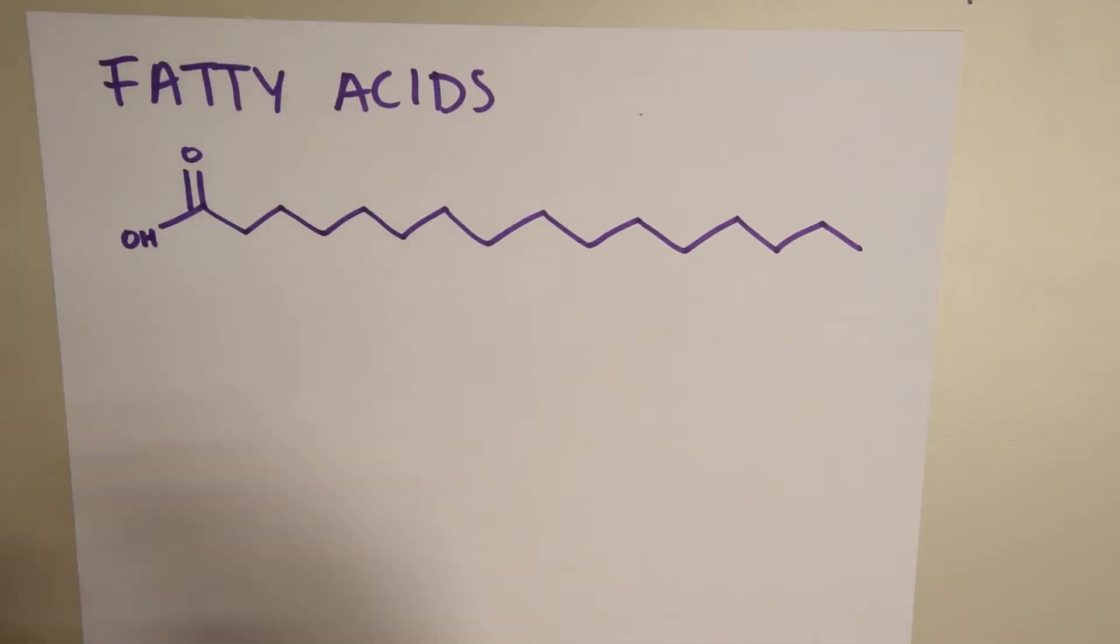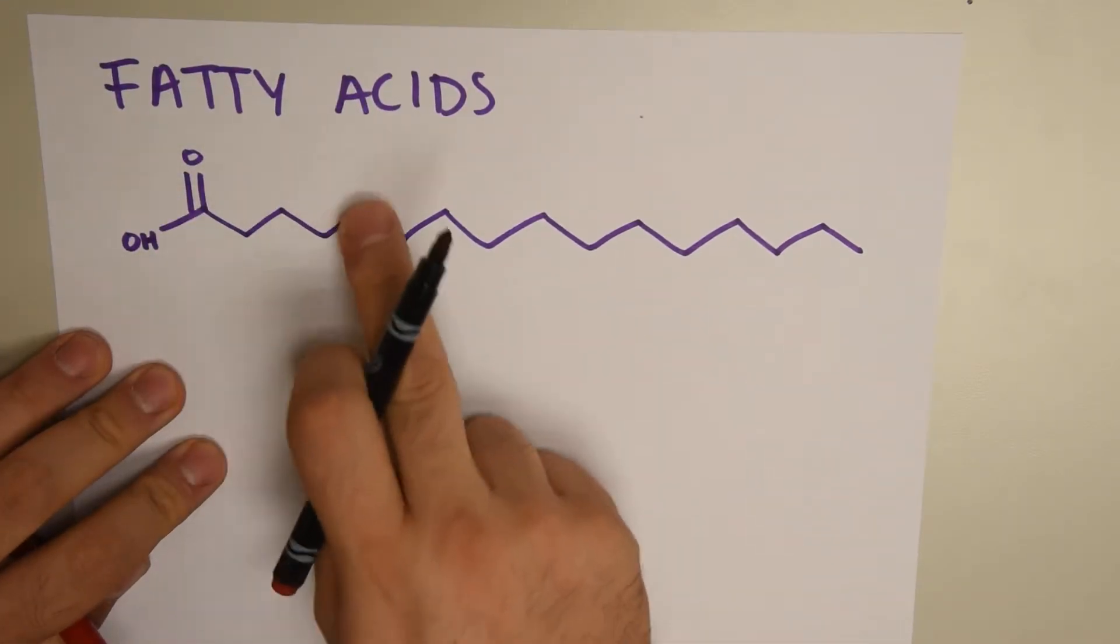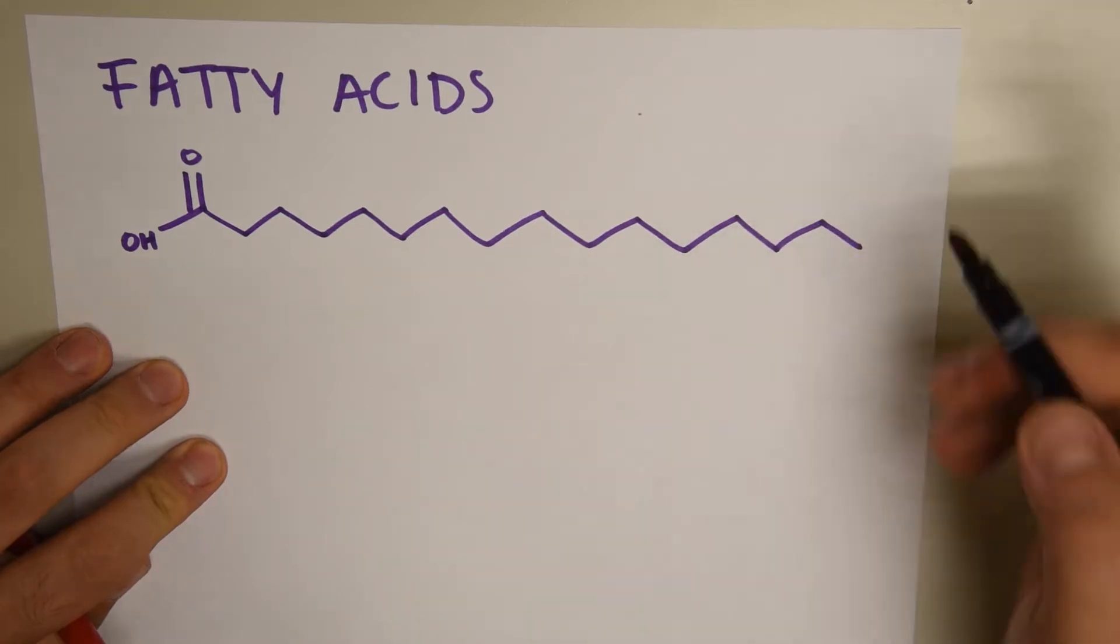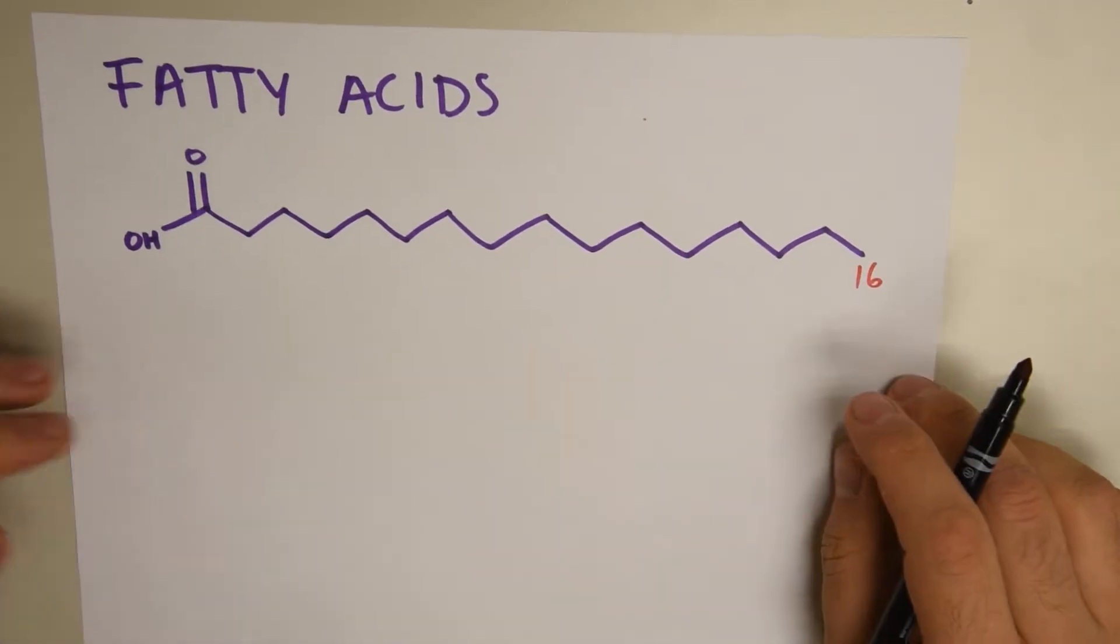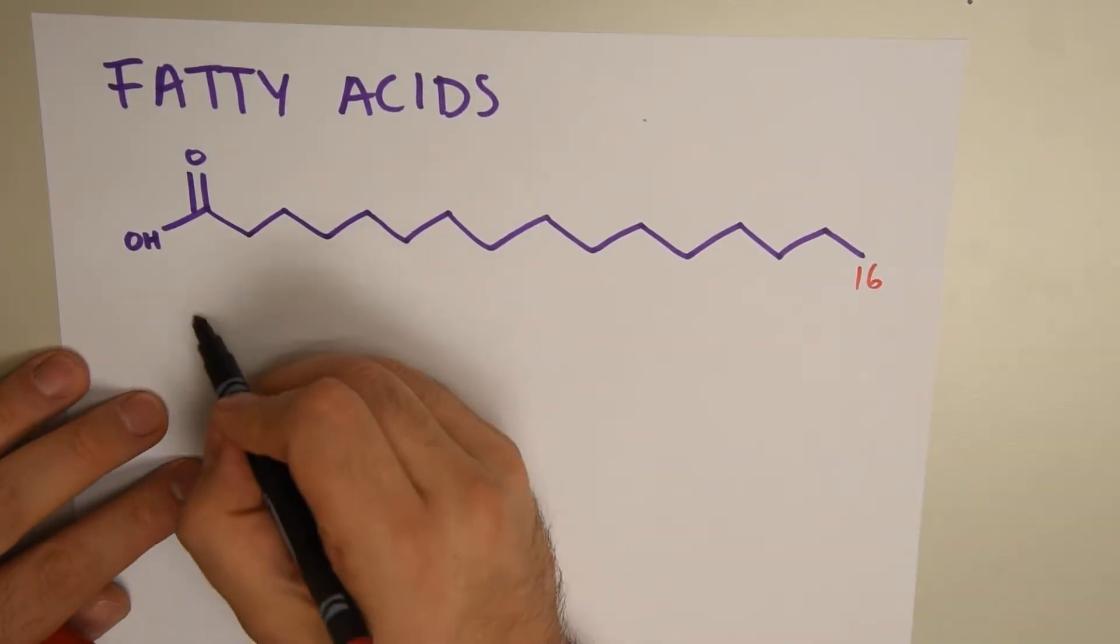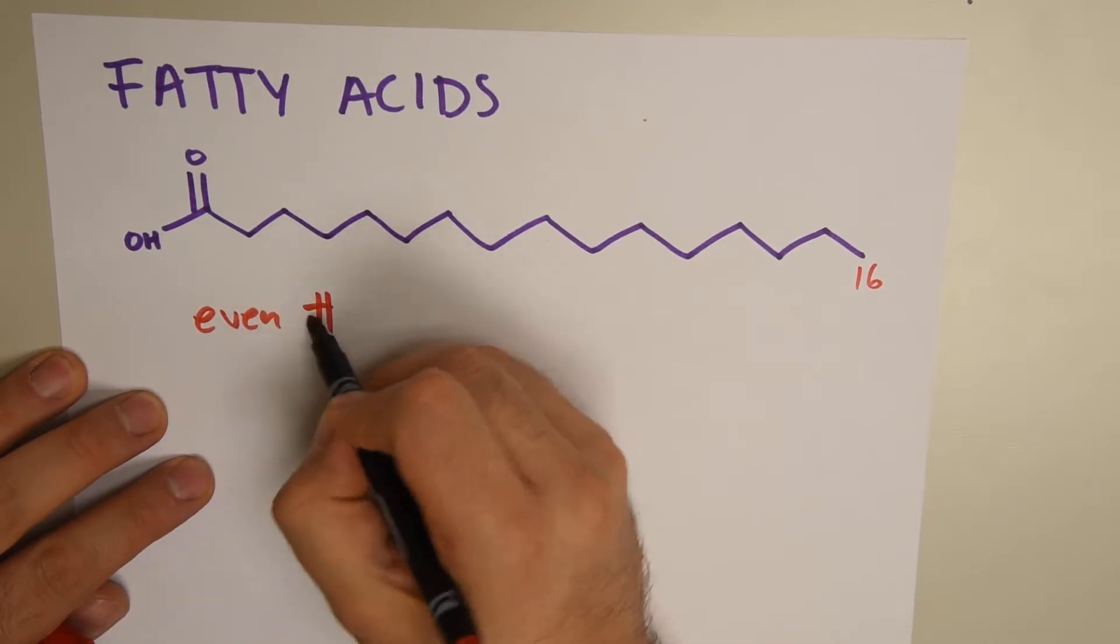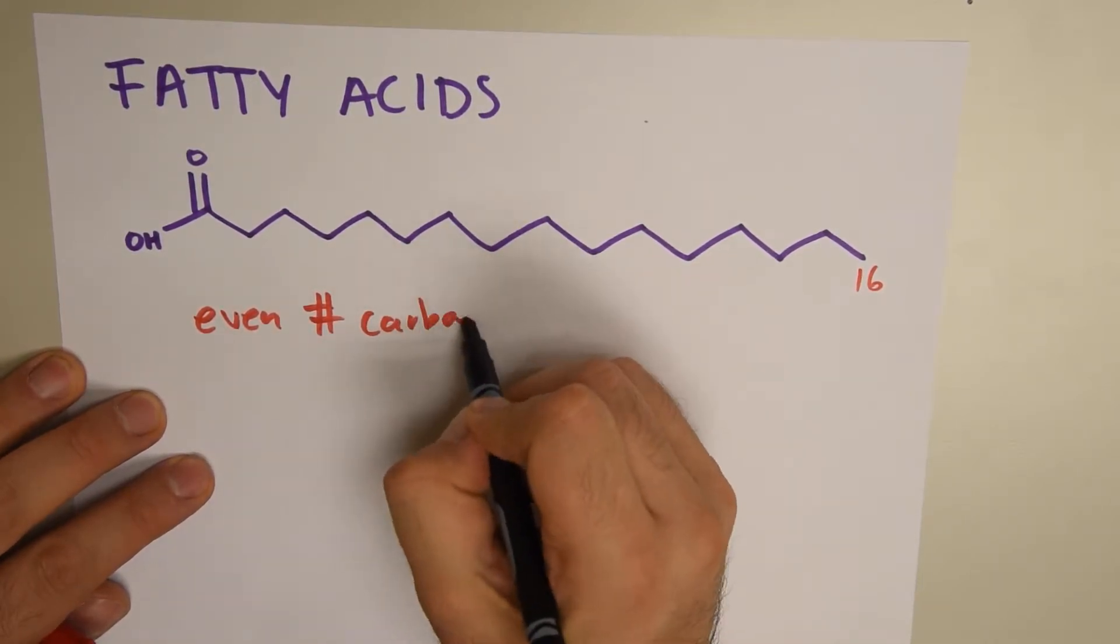How many carbons are in this fatty acid? Counting 1, 2, 3, 4, 5, 6, 7, 8, 9, 10, 11, 12, 13, 14, 15, 16. And it's notable to mention fatty acids usually have an even number of carbon atoms.